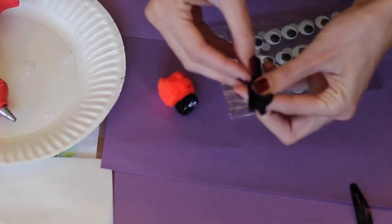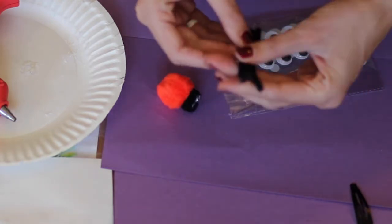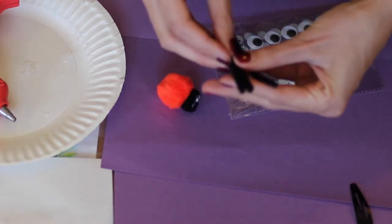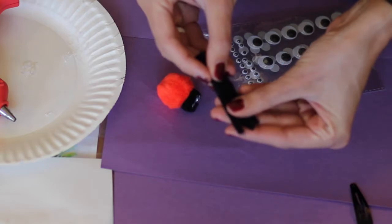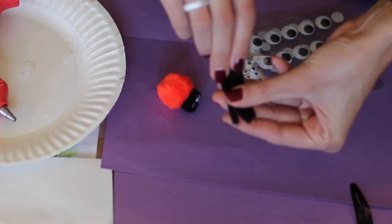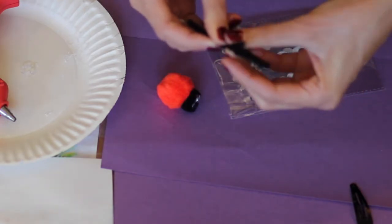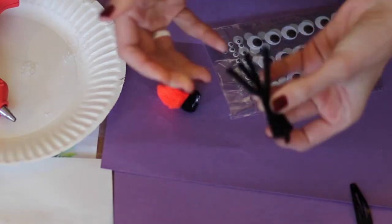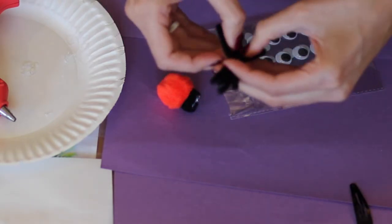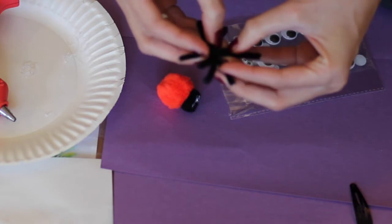And then I'm going to take the four pipe cleaners, and I'm going to put them in a row all together, and then I'm just going to fold them, like kind of twist them over the top of each other a couple of times, to where they stick together, and where the legs kind of sprawl out, since these are going to be our legs.